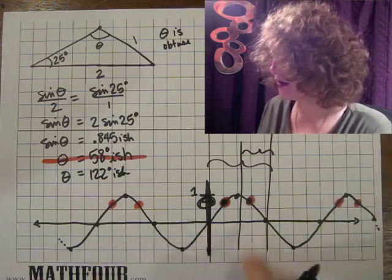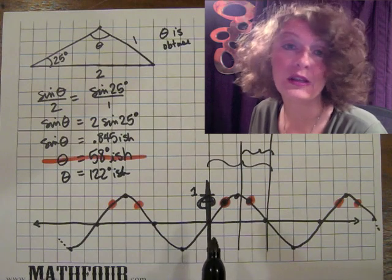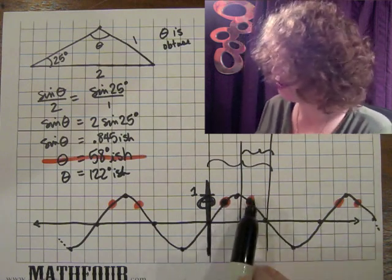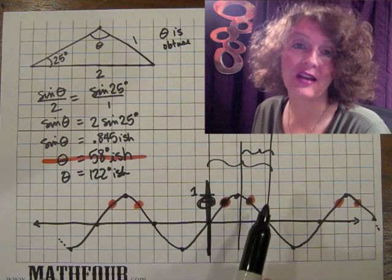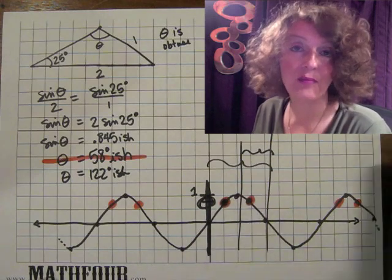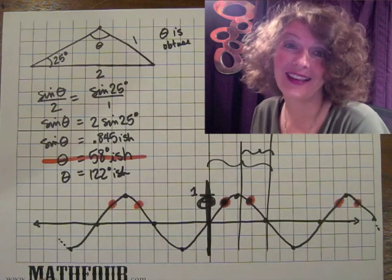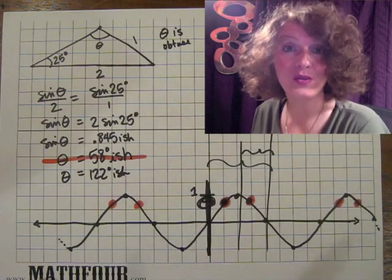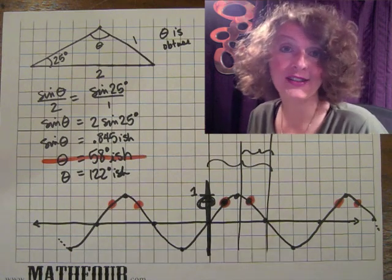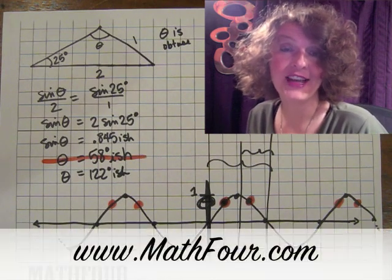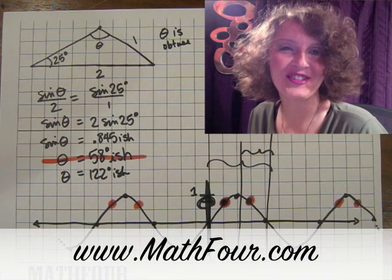So the reason you get the wrong answer is because the calculator doesn't know what you really want. You have to take what it gives you and still do yet another step. The black box, as cute and wonderful as it is, is not the end-all and be-all. So that's why when you do the law of sines, sometimes you get the wrong answer — you've got to be careful. This is Bon Crowder with Math4.com reminding you that math is not a four-letter word. Thank you.